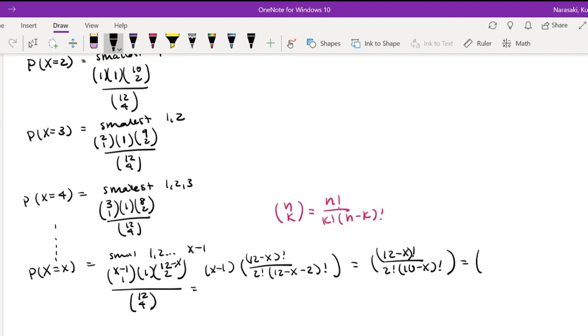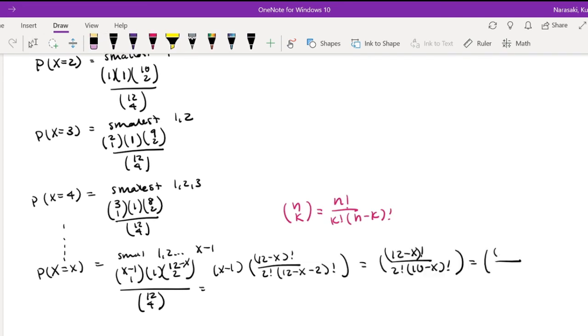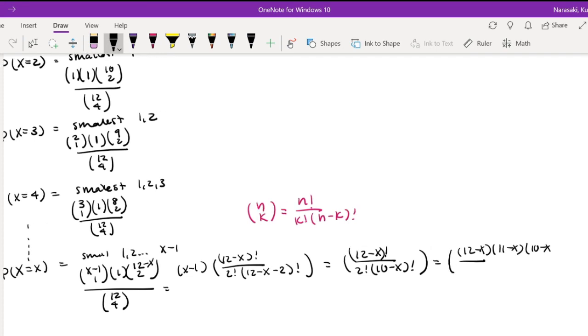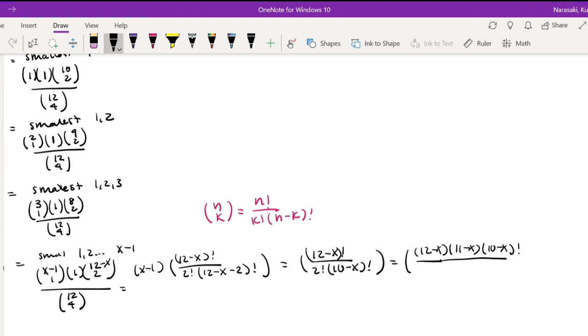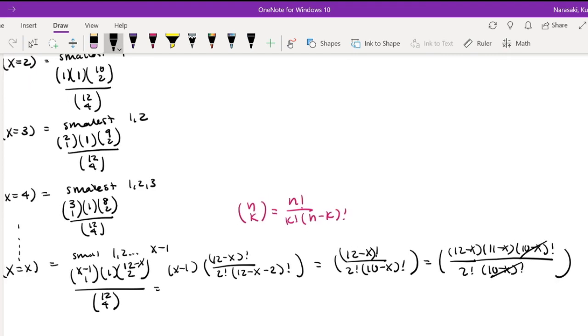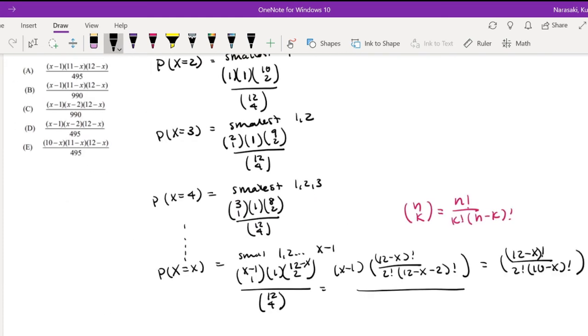So this is equal to 12 minus x factorial. We can always say this is equal to 12 minus x times 11 minus x times 10 minus x factorial, and so on. I wrote it like that so I can cancel it out with the denominator here. And this is all equal to 12 choose 4, which is equal to 495.